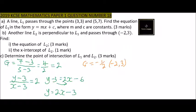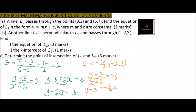We have the gradient -½ and the point (-2, 3). So we say (y - 3) divided by (x + 2) equals -½. When you cross multiply, you get y - 3 = -½x - 1. Taking 3 to the other side, y = -½x + 2.